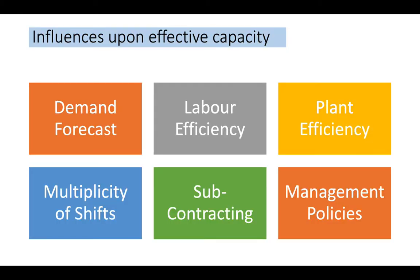The major factors which influence effective capacity are: demand forecast, labor efficiency, plant efficiency, multiplicity of shift, subcontracting, and management policies. We will deal with each one by one.